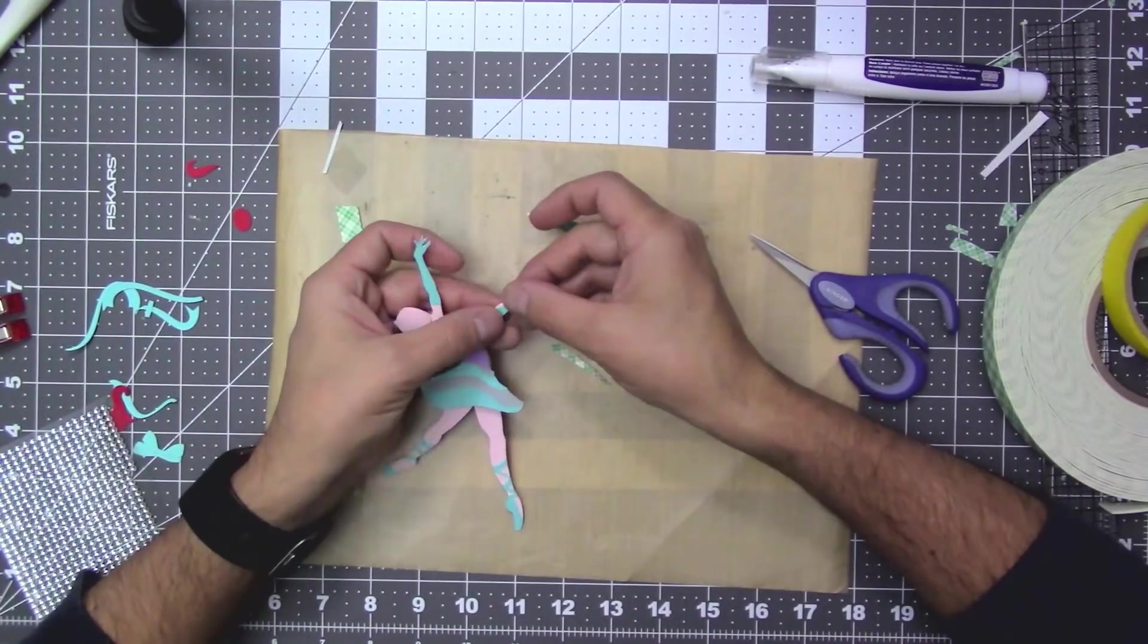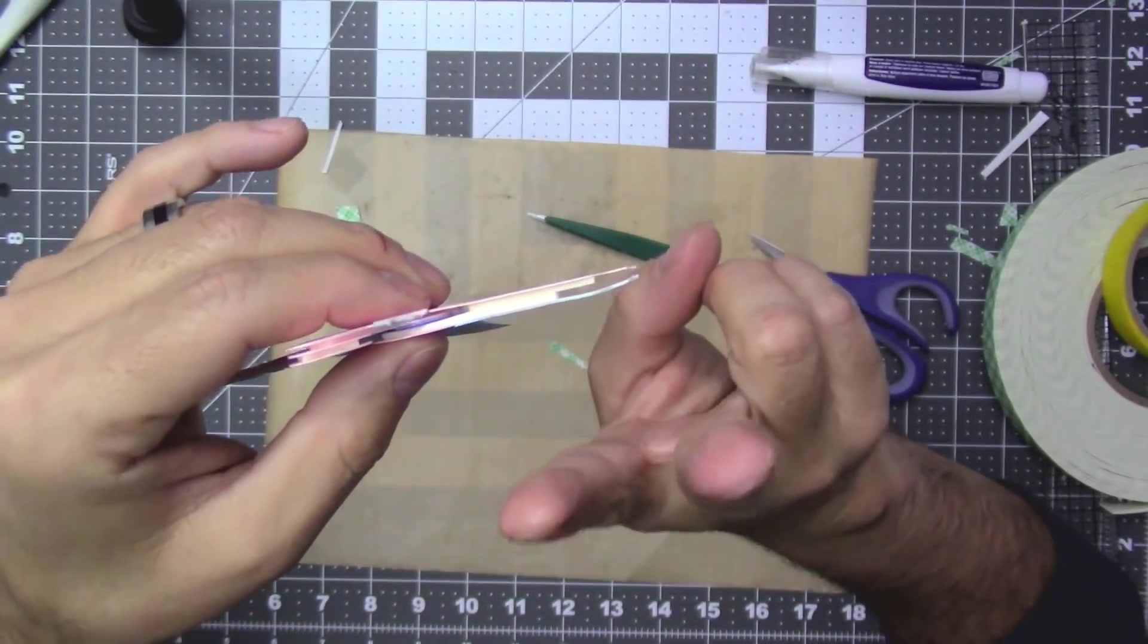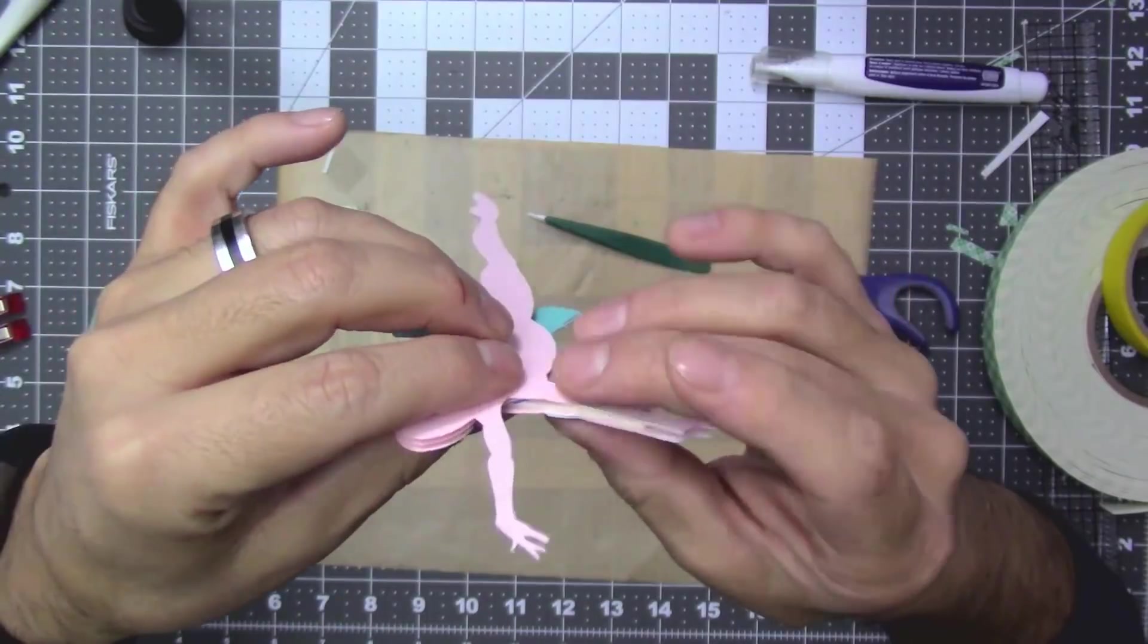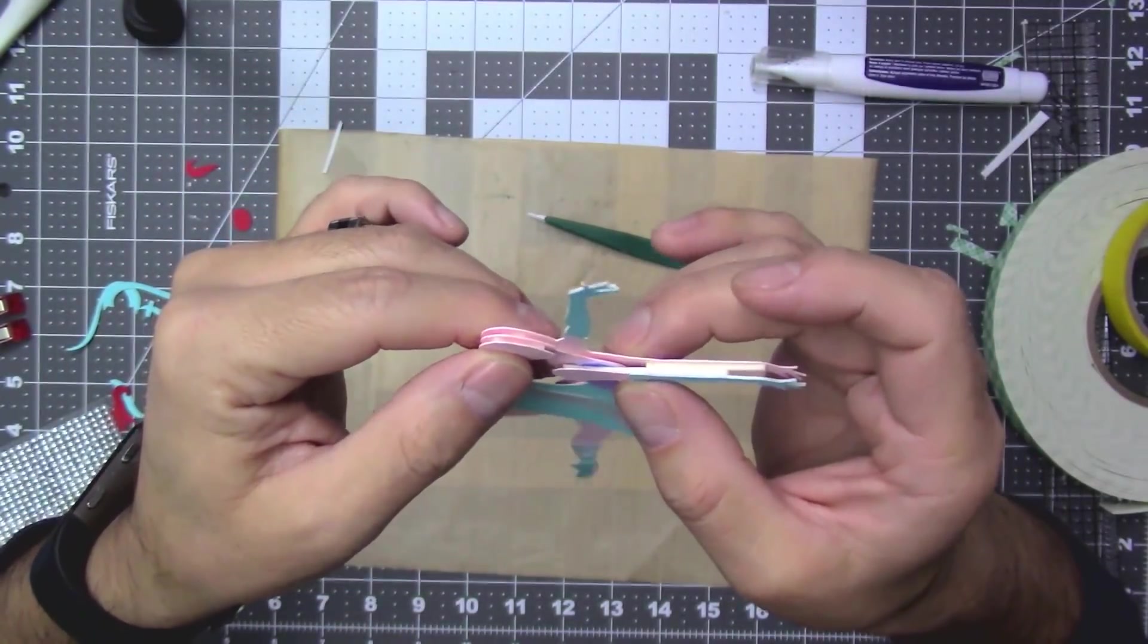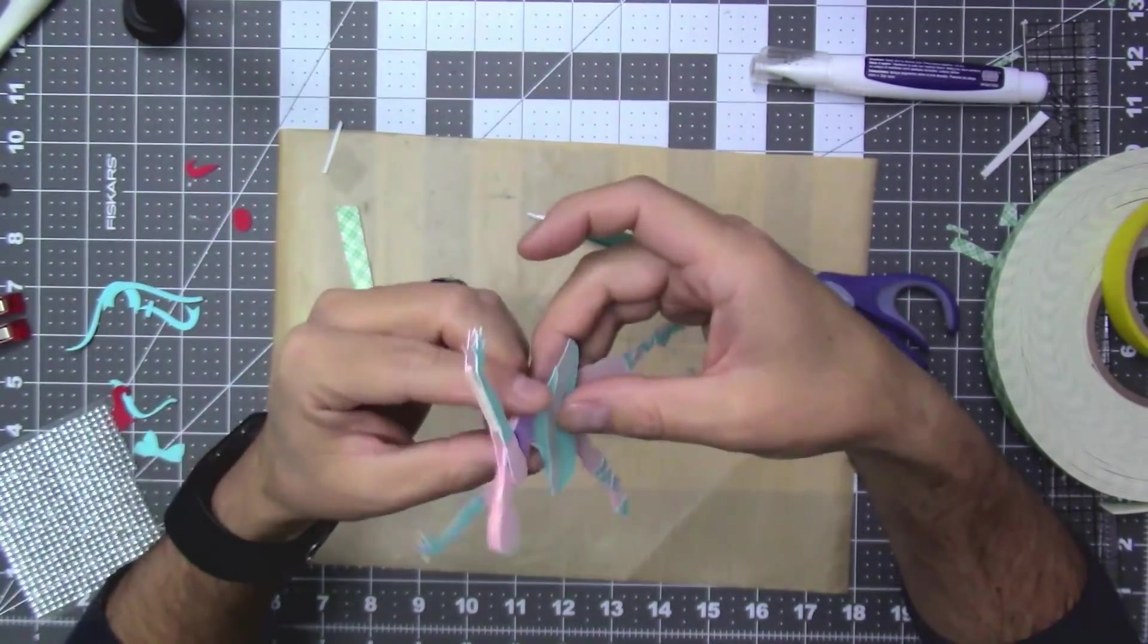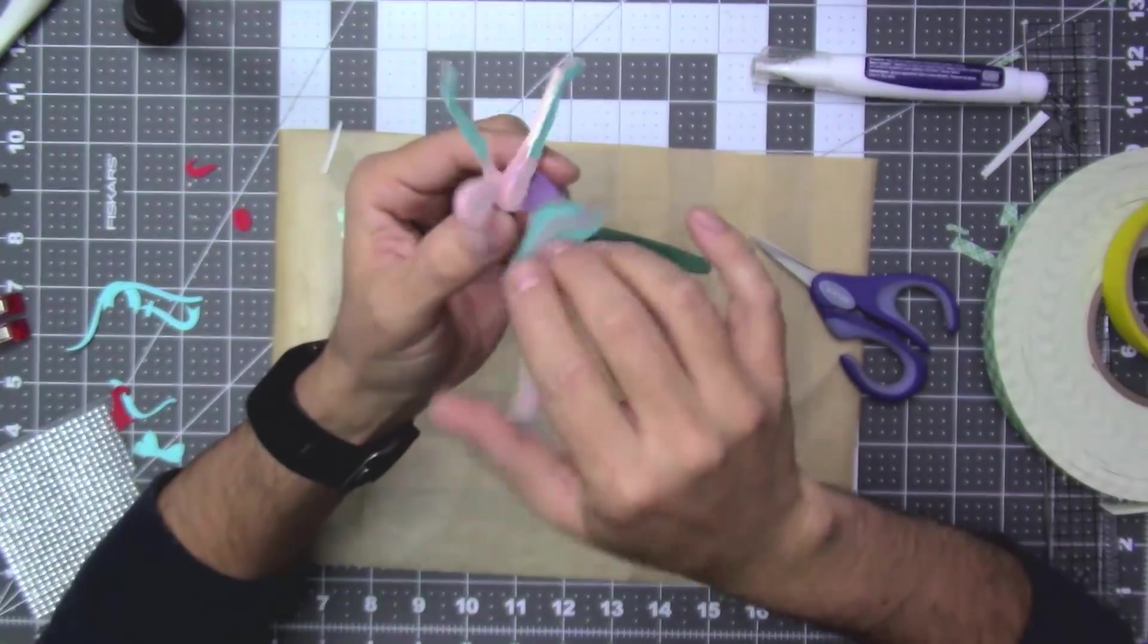Remove the backing of the foam tape. Align it with the back piece of the body. And here you see me using two pieces of foam tape on the hand and the wrist and only one piece on the shoulder.